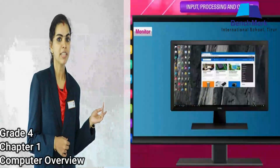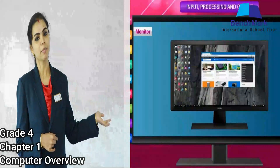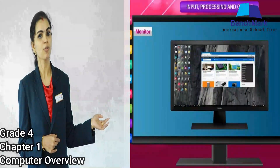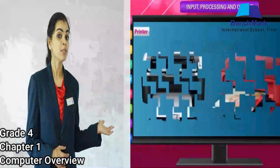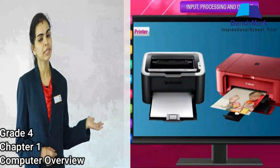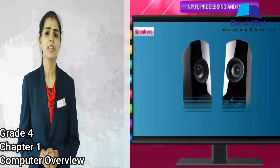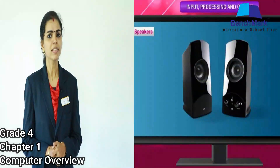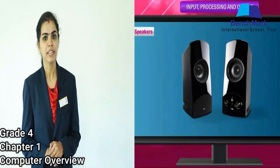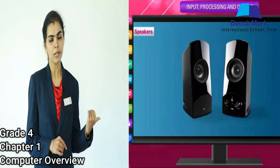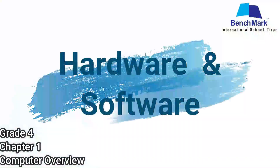Can you able to see the monitor? The monitor is a major output device which is used to display the output. Next, can you able to see the printer? The printer is also one of the output devices that we use. Children, when you are listening to music, how do we get it as output? We get it through a speaker, so the speaker is also one of the output devices.